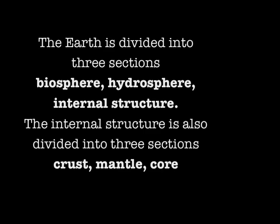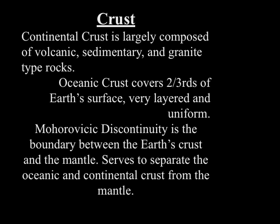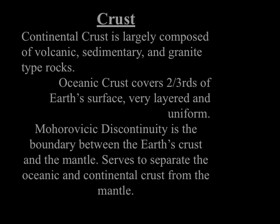Continental crust is largely composed of volcanic, sedimentary, and granite-type rocks. Oceanic crust covers two-thirds of Earth's surface and is very layered and uniform. The Mohorovičić discontinuity is the boundary between the Earth's crust and the mantle, serving to separate the oceanic and continental crust from the mantle.